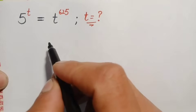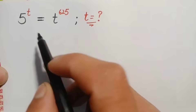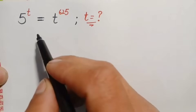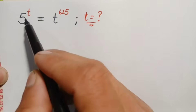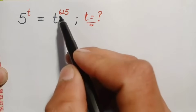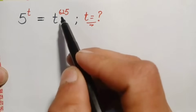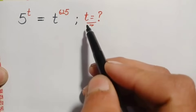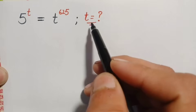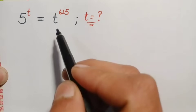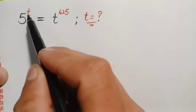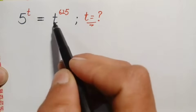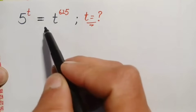Hello everyone, you are welcome to solve this beautiful exponential math problem, which is 5 raised to power t is equal to t raised to power 625. We will try to find out the value of this unknown t. How can we solve this problem where the unknown is in the power on the left-hand side and in the base on the right-hand side?